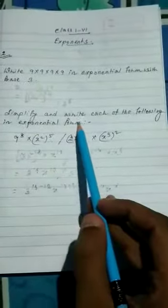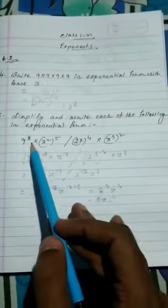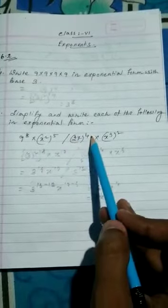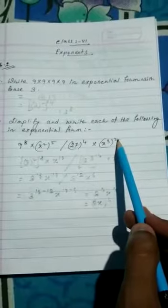Next is simplify and write each of the following in exponential form: 9 to the power 8 times x squared to the power 5 divided by 27 to the power 4 times x to the power 3 whole squared.